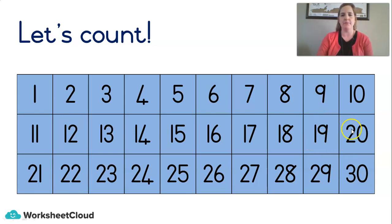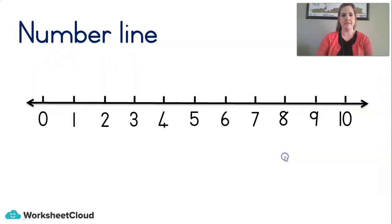Okay, let's count backwards from twenty. We're starting at twenty and we're going backwards. The numbers are getting smaller. Twenty, nineteen, eighteen, seventeen, sixteen, fifteen, fourteen, thirteen, twelve, eleven, ten, nine, eight, seven, six, five, four, three, two, one. Very good.